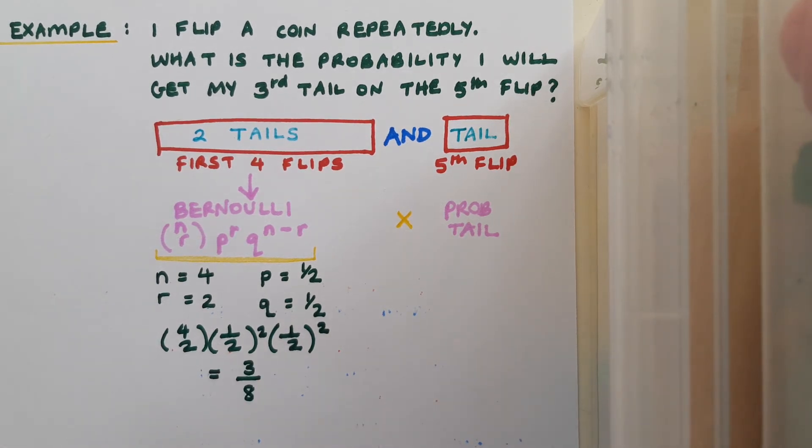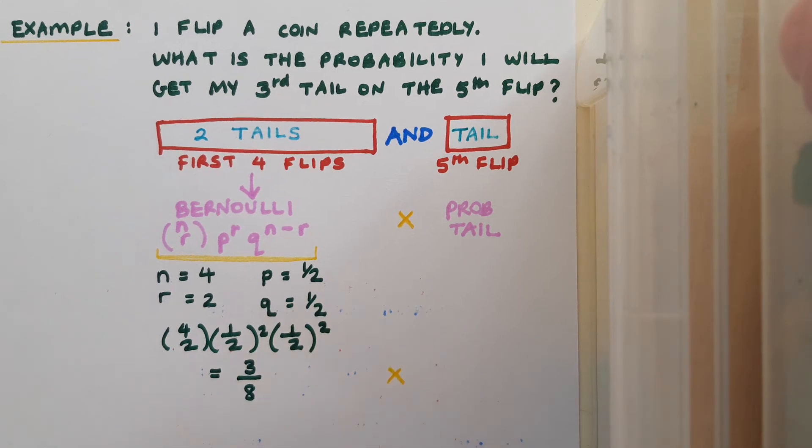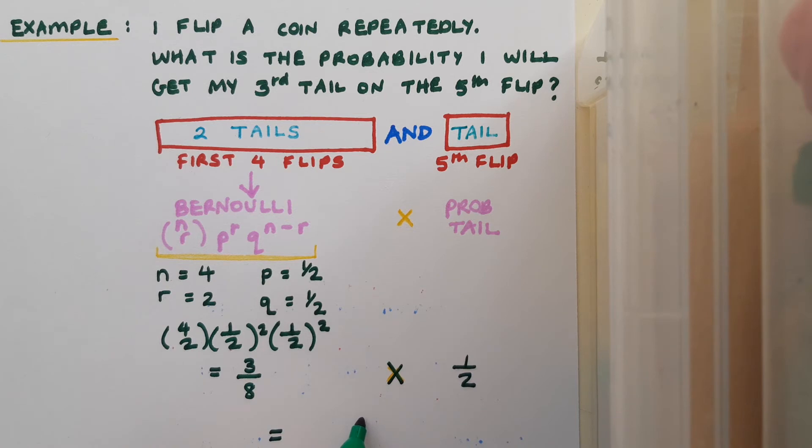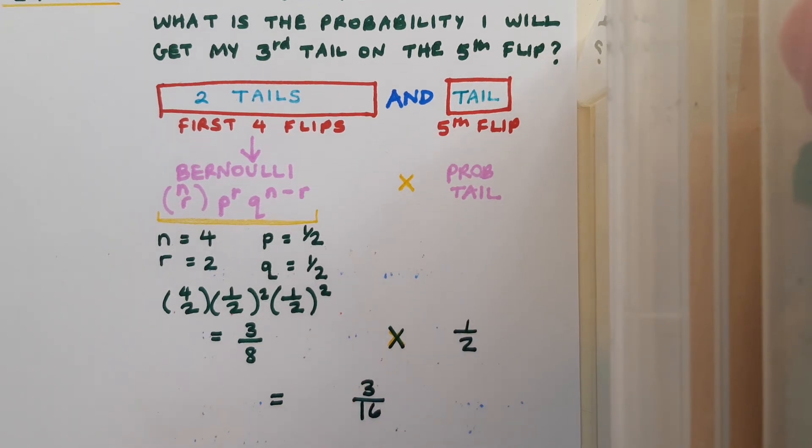When I evaluate this, I get three over eight. Now, I'm going to multiply this by the probability of getting tails on that fifth final flip. Well, any individual flip of the coin has a probability of a half for getting tails. So I'm going to say three over eight times a half. My answer is going to be three over sixteen. So the probability that I will get the third tail on the fifth flip is three over sixteen.